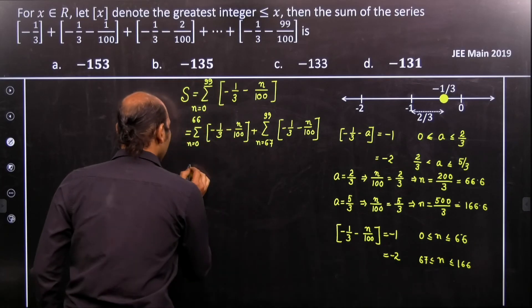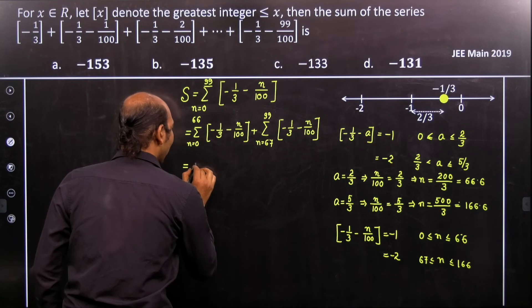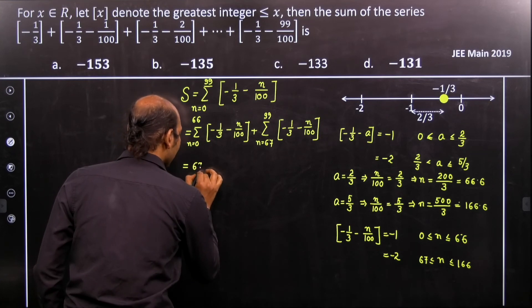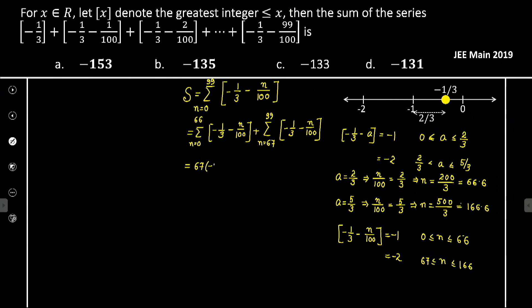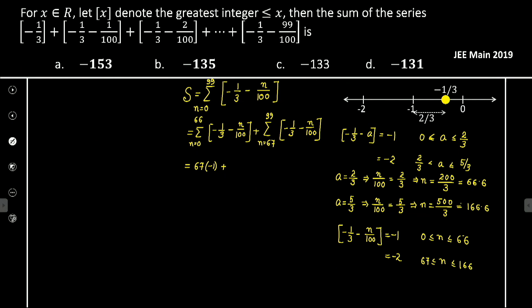Now observe carefully that the sum of the first part gives you actually 67 terms multiplied by minus 1, because it's starting from 0. Now 67 to 99, how many terms are there?